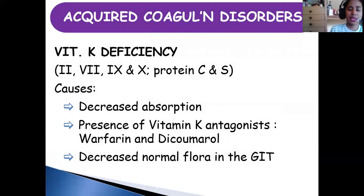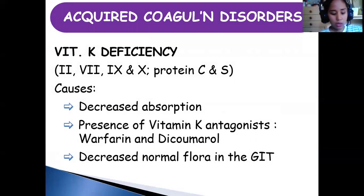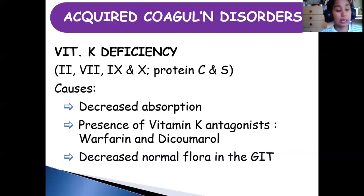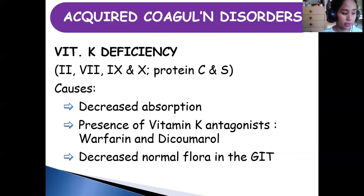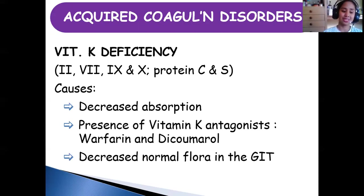Vitamin K deficiency is very important in coagulation. Vitamin K acts as a coenzyme — the only lipid-soluble vitamin that acts as a coenzyme. We have three forms: K1, found in green leafy vegetables; K2, found in meat and produced by intestinal bacteria; and K3. It is actually rare to have vitamin K deficiency because gut bacteria produce it.